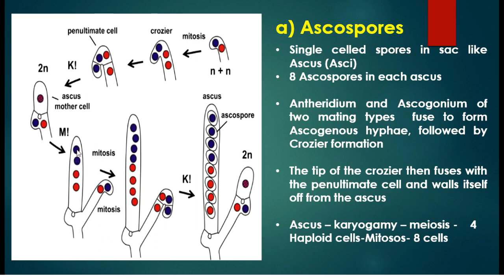The diploid zygote divides immediately by meiosis, producing four haploid cells. In the case of ascospore formation, meiosis is followed by mitosis, so the four cells become eight cells. Thus eight ascospores are produced within the sac-like structure called the ascus.